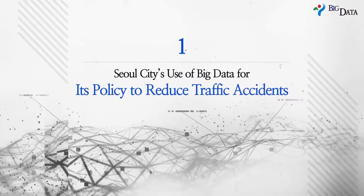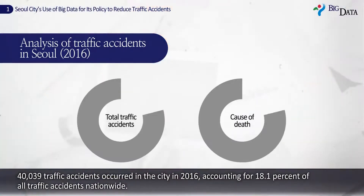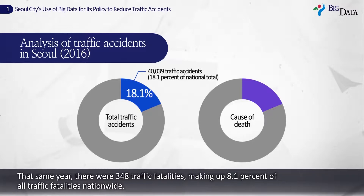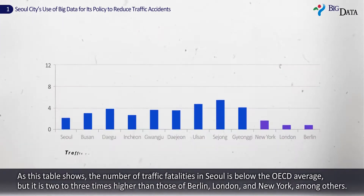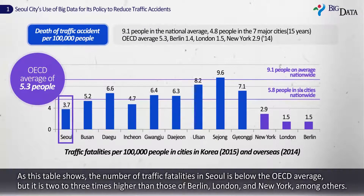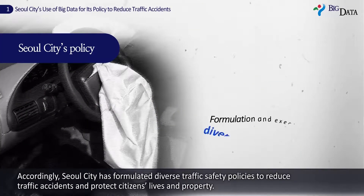According to an analysis of traffic accidents in Seoul in 2016, 40,309 traffic accidents occurred in the city, accounting for 18.1% of all traffic accidents nationwide. That same year there were 348 traffic fatalities, making up 8.1% of all traffic fatalities nationwide. As this table shows, the number of traffic fatalities in Seoul is below the OECD average, but it is two to three times higher than those of Berlin, London, and New York, among others.